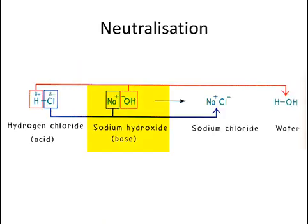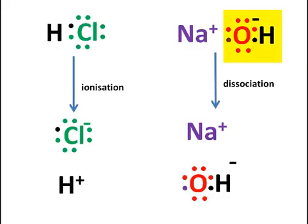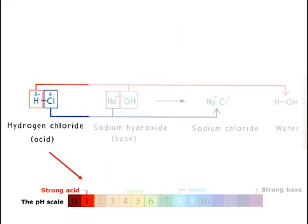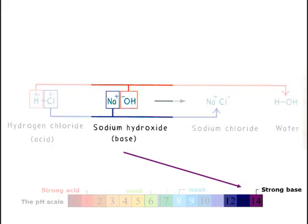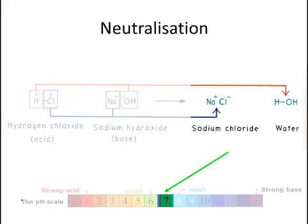We know that sodium hydroxide is a base since it is a proton acceptor. The hydroxyl ion within the sodium hydroxide accepts the hydrogen ion to become water. Hydrochloric acid would turn universal indicator yellow or red. Sodium hydroxide on its own would turn universal indicator purple. Once they have reacted together, they form a salt which is neutral and it would turn universal indicator green.